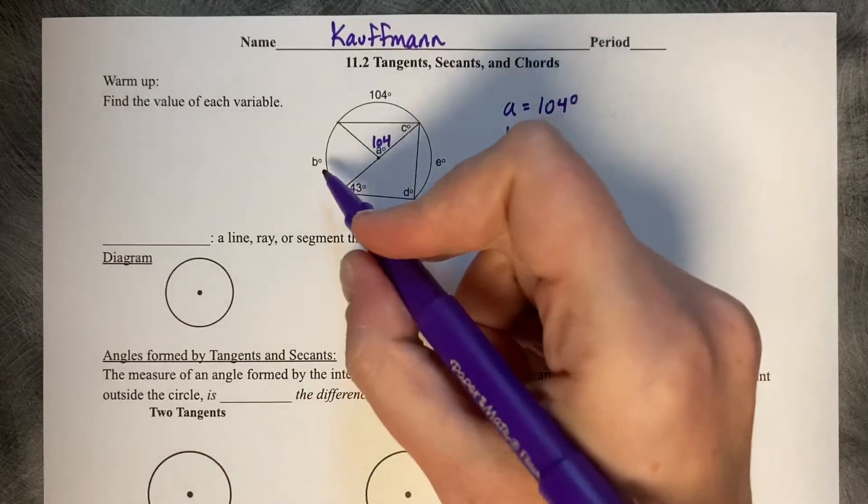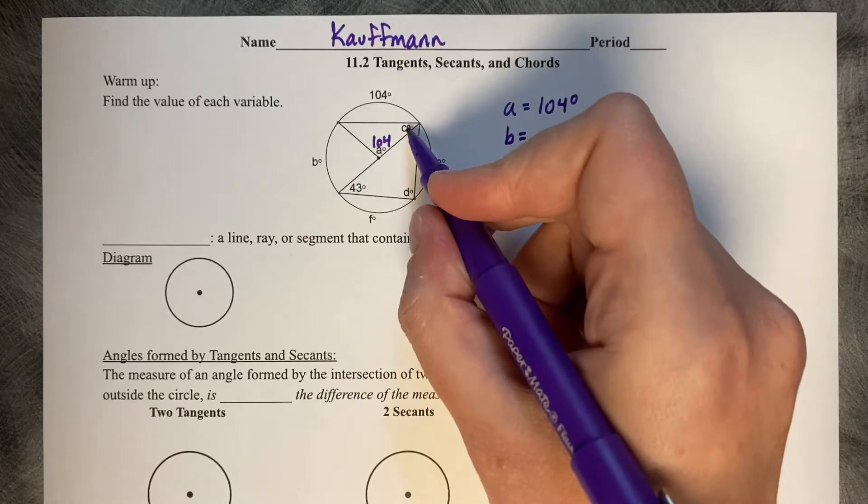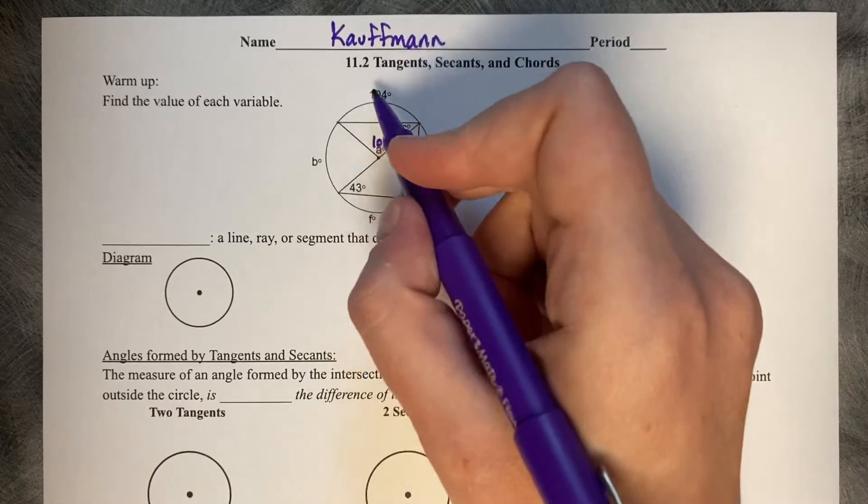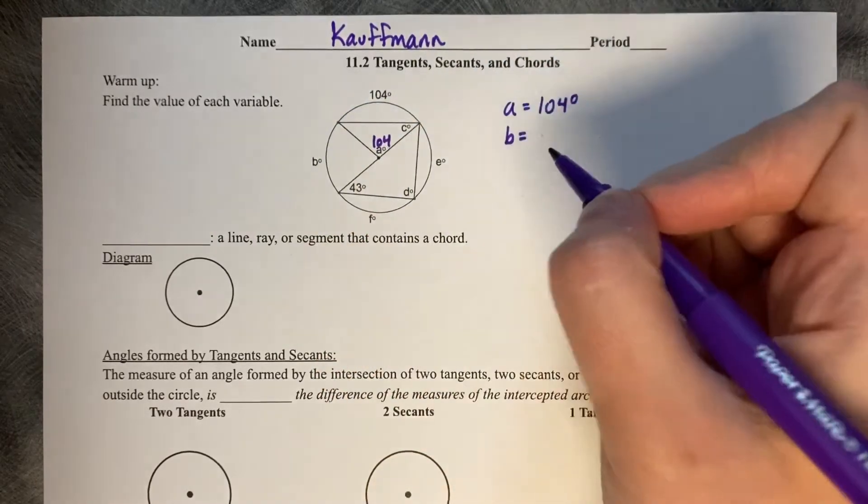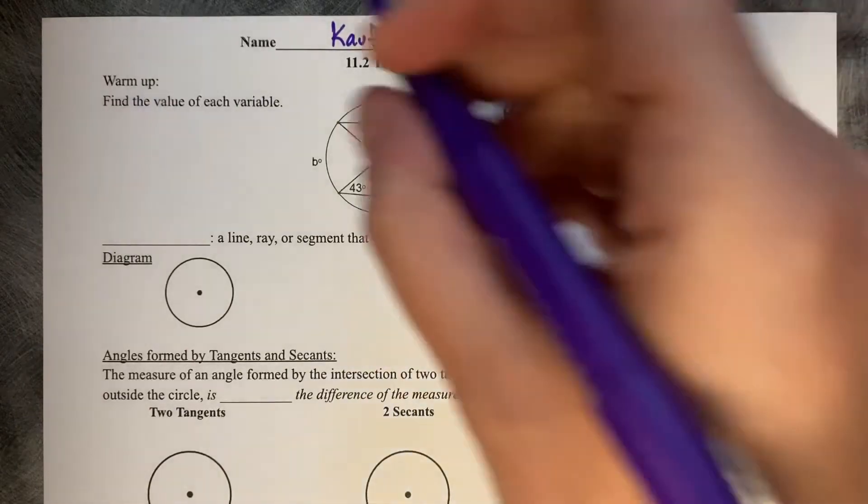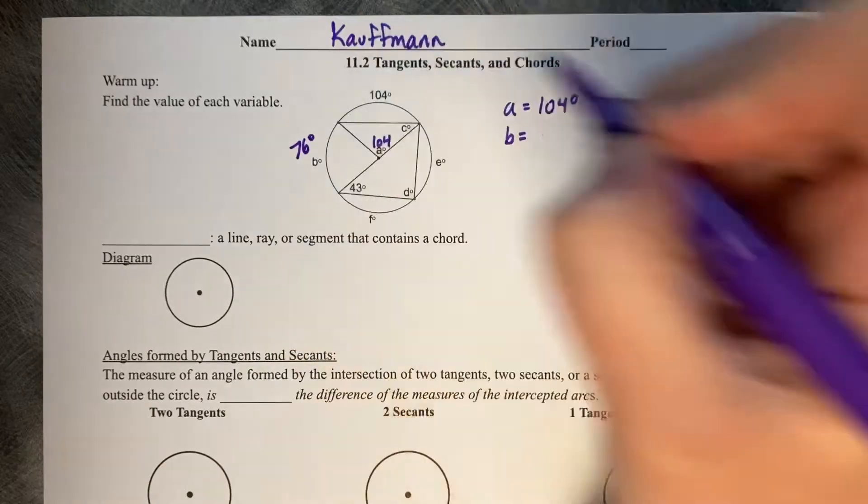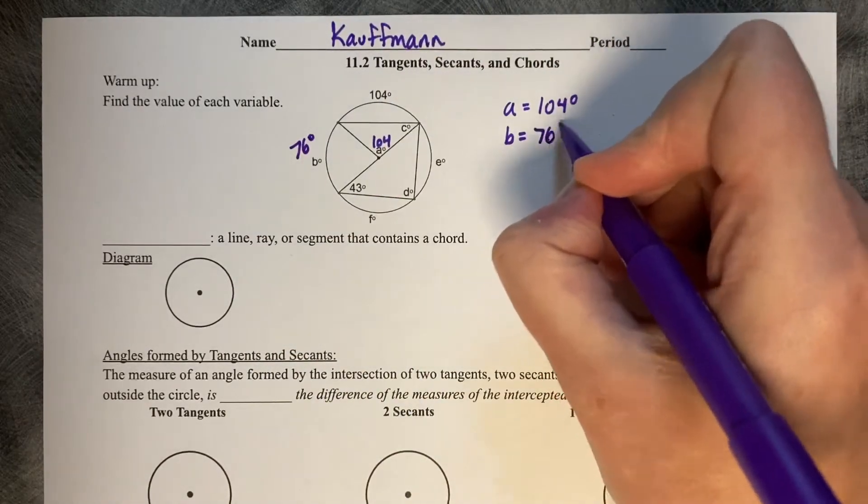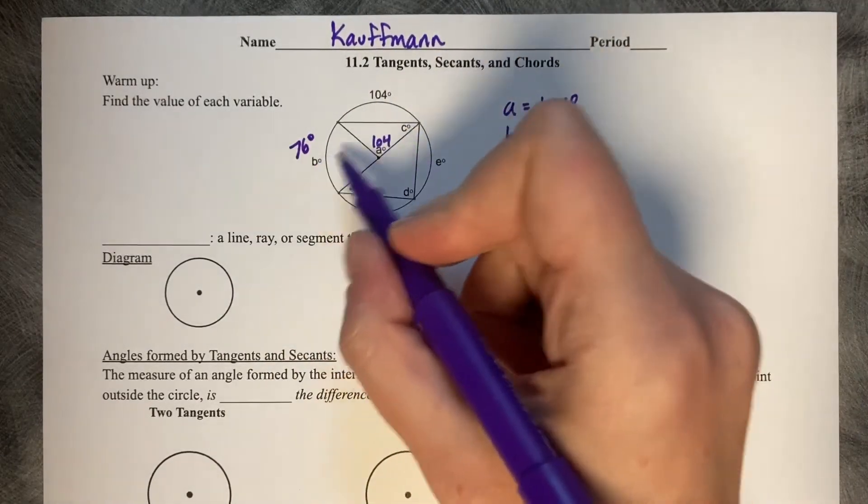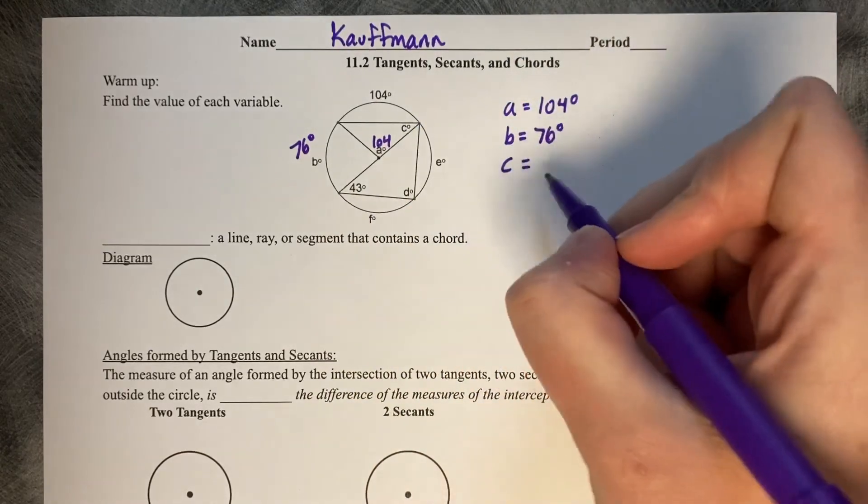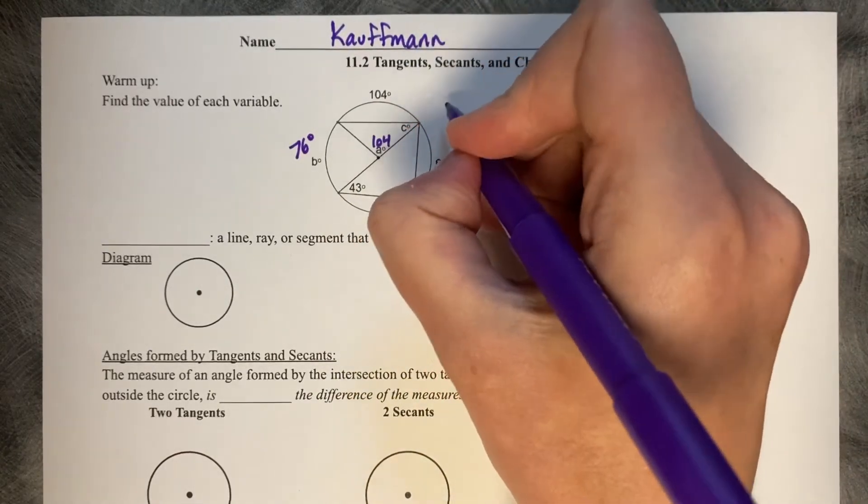B corresponds to angle C, which we don't have right now, but we could get it by subtracting 180 from 104. So, 180 minus 104 is 76 degrees, so B is 76 degrees, which means that half of that size is going to be C, and half of 76 is 38.